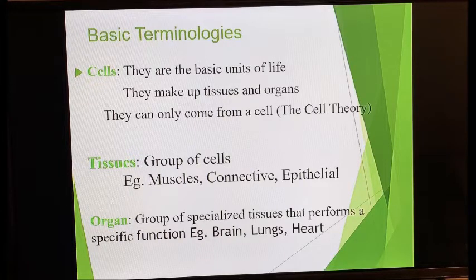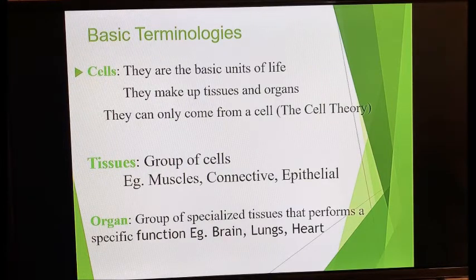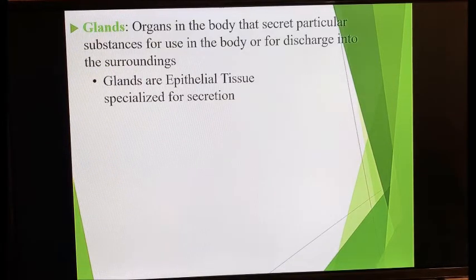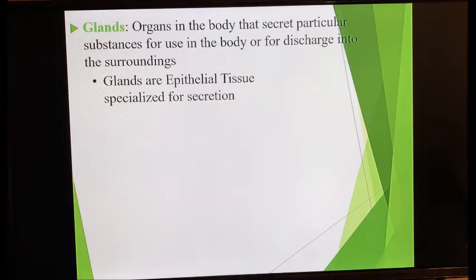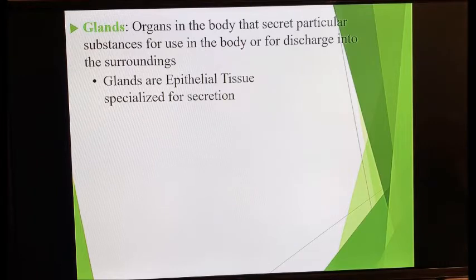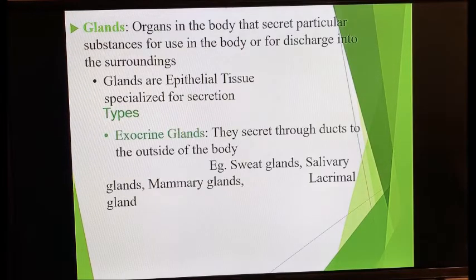Organs are a group of specialized tissues that perform a specific function — your brain has a different function from your heart, so they are specialized to perform specific functions. Glands are organs in the body that secrete particular substances for use in the body or for discharge into the surroundings.